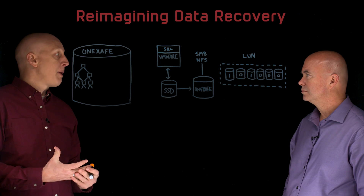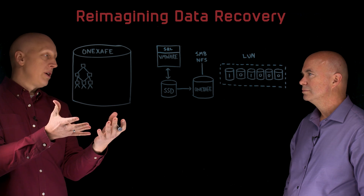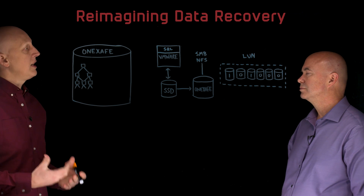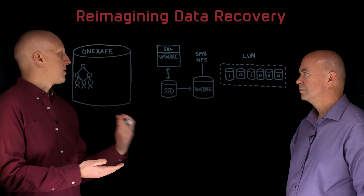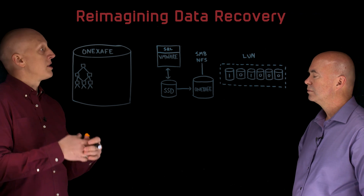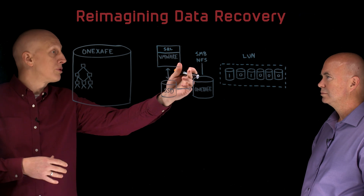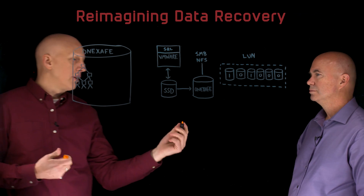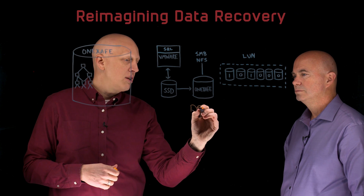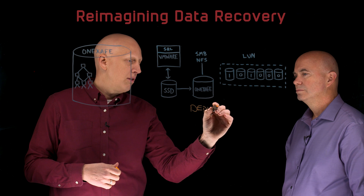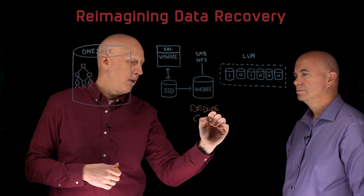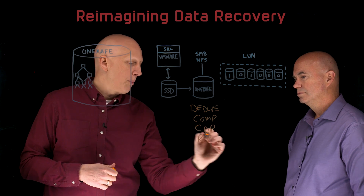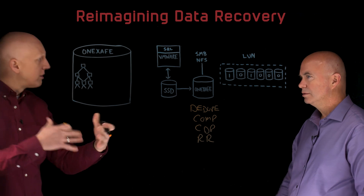The way we're unique about recovering that is because underneath the covers with an object store, you have some distinct advantages for those continuous snapshots every 90 seconds, because everything is an object to us. Even though we're serving out NFS and SMB, we do a number of things: deduplication, compression, CDP, and remote replication, to protect all that information.